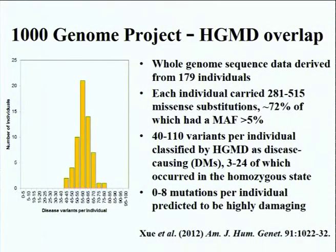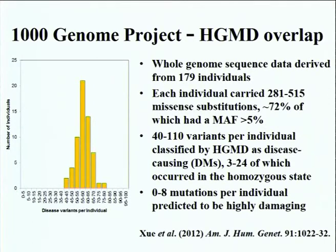One of the criticisms often leveled at the way we curate HGMD is as follows: people say that some of the mutations that appear in HGMD also appear in the 1,000 Genomes Project dataset. How can these mutations be disease-causing if they also appear in the general population? This sort of question puzzles us because the answers we feel should be somewhat obvious. It's always better to pay closer attention to criticism than to praise.